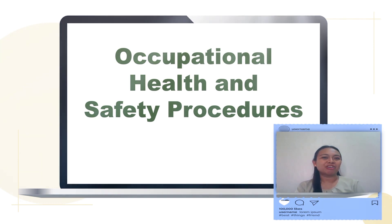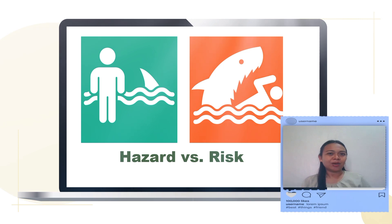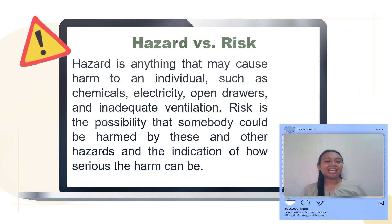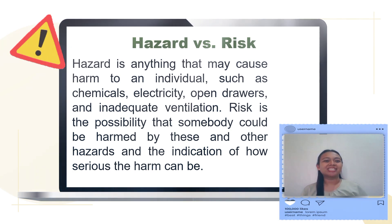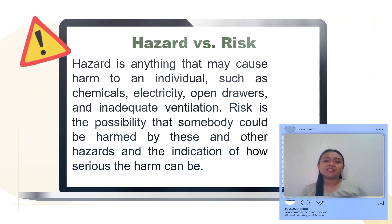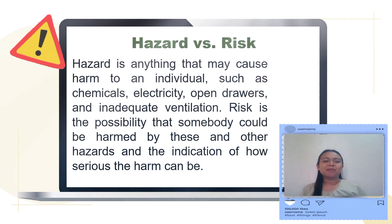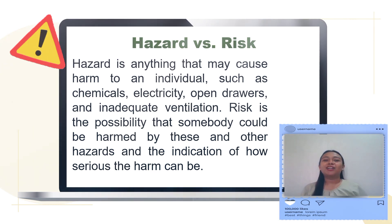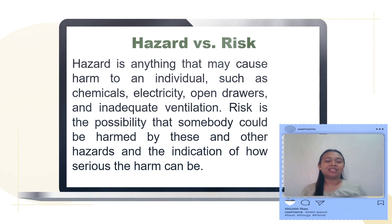Can you look at the picture closely? What can you see? Yes, it is hazard and risk. Hazard is anything that may cause harm to an individual, such as chemicals, electricity, open drawers, and inadequate ventilation. Risk is the possibility that somebody could be harmed by the hazard, and the indication of how serious the harm can be. Looking back at the picture: the hazard is the shark in the sea, and the risk — the possibility that you will be harmed — is greater when you swim in that sea.